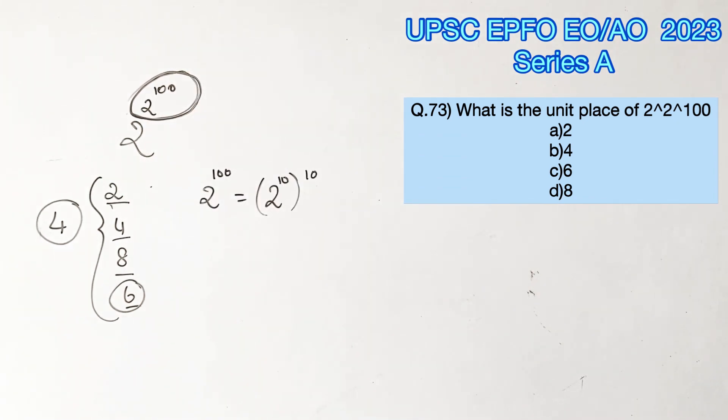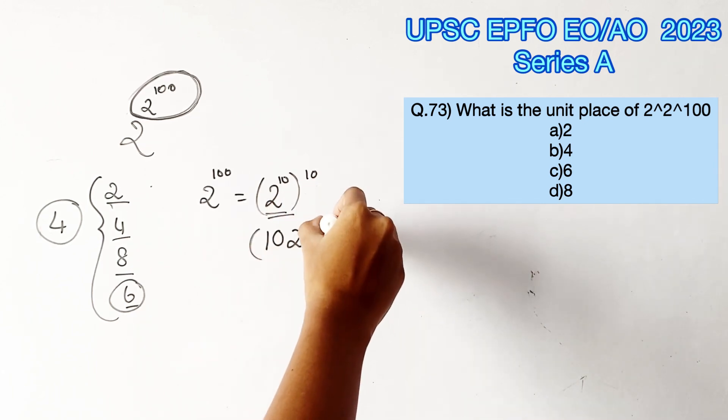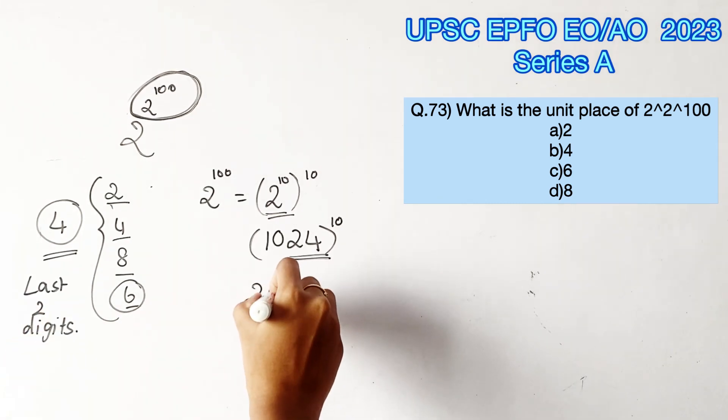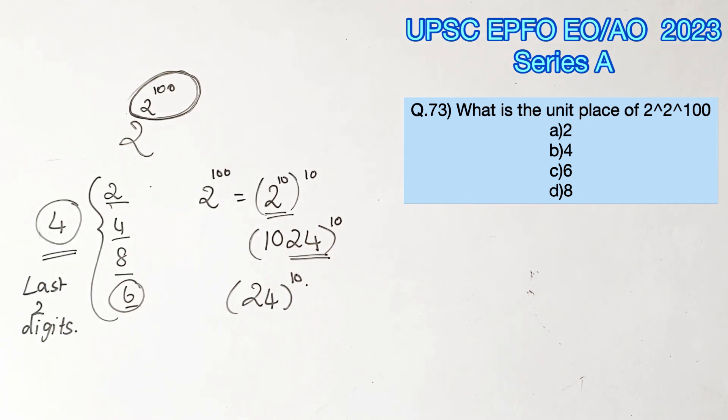We know that 2 power 10 is nothing but 1024. So this can be written as 1024, the whole power 10. Now all we need is the last two digits, so we will take 24 out. So we will have to find the last two digits of 24 power 10.